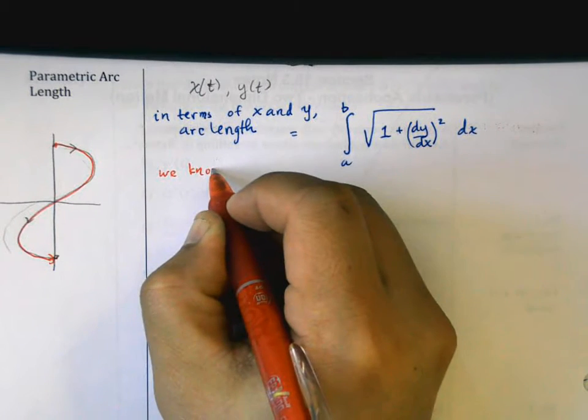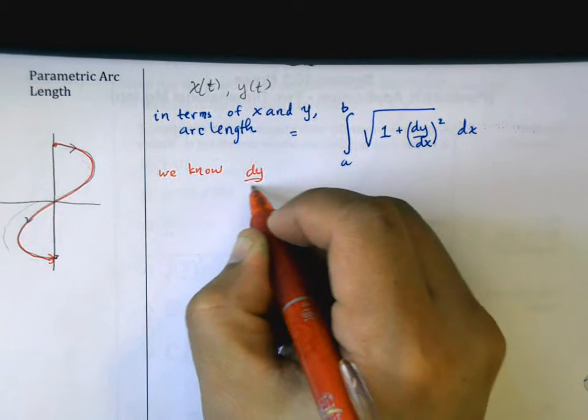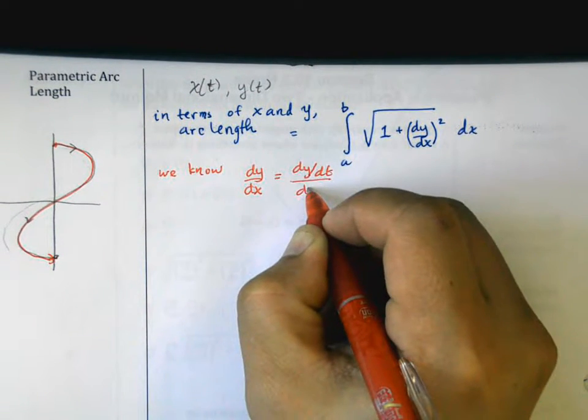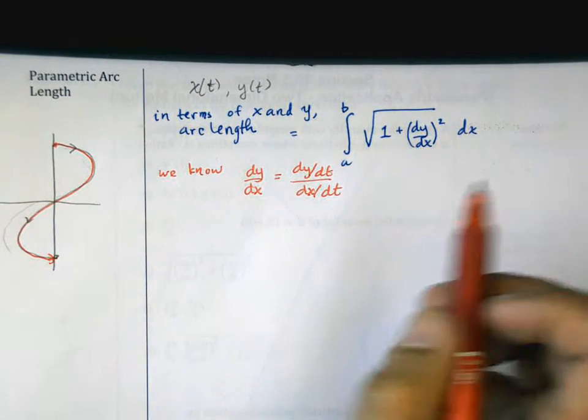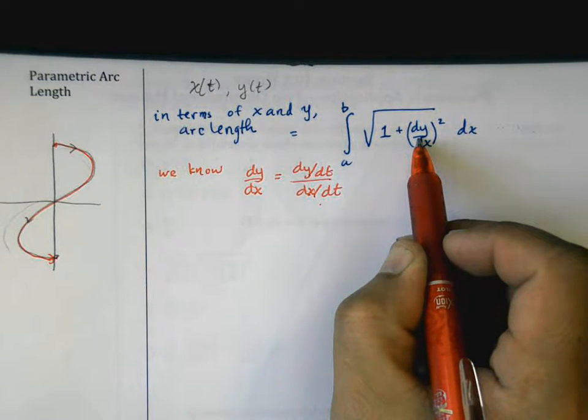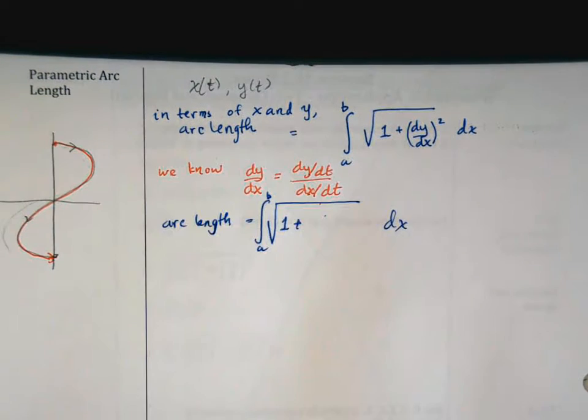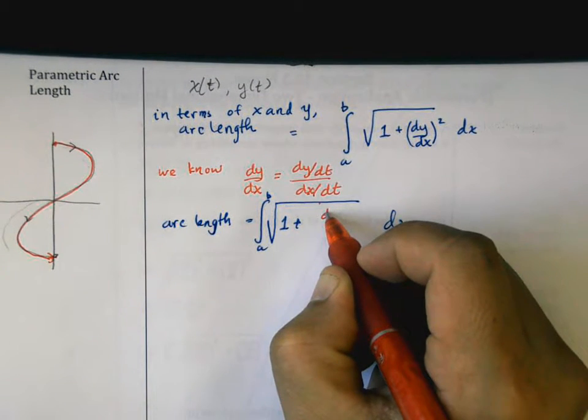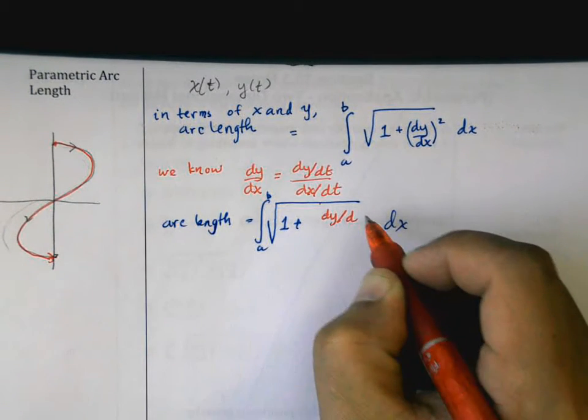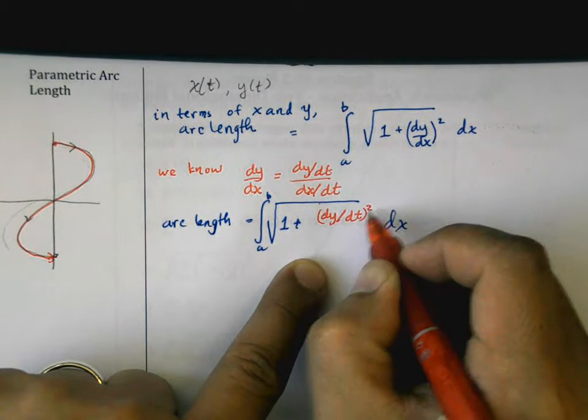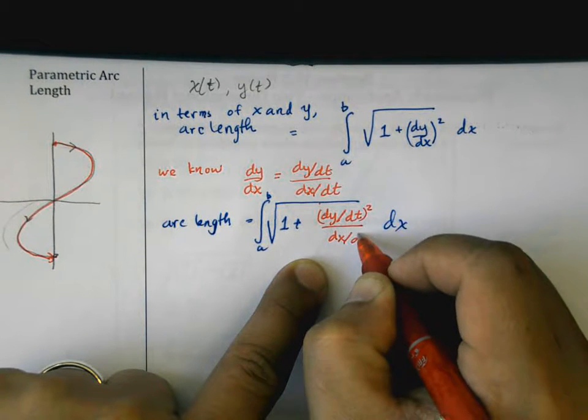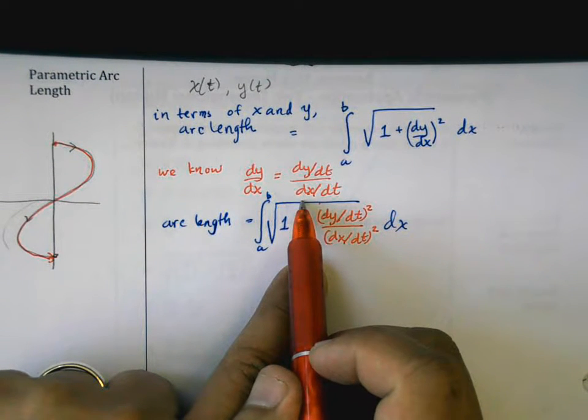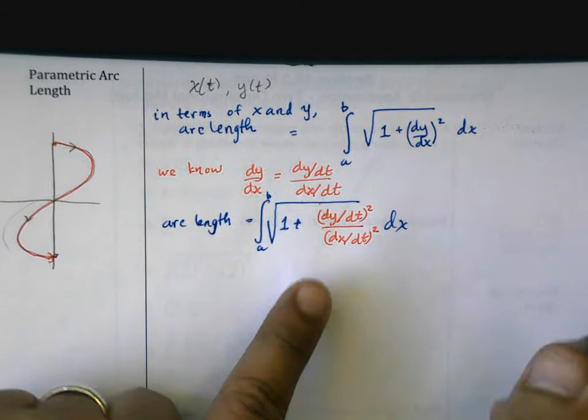We know already that dy/dx is equal to (dy/dt) over (dx/dt). So I'm going to take this result and substitute it in for dy/dx. So I get the same thing, but instead of (dy/dx)², it's going to be (dy/dt)² over (dx/dt)². Because I'm taking dy/dt over dx/dt and substituting in here and then squaring it, so this is what I would get.